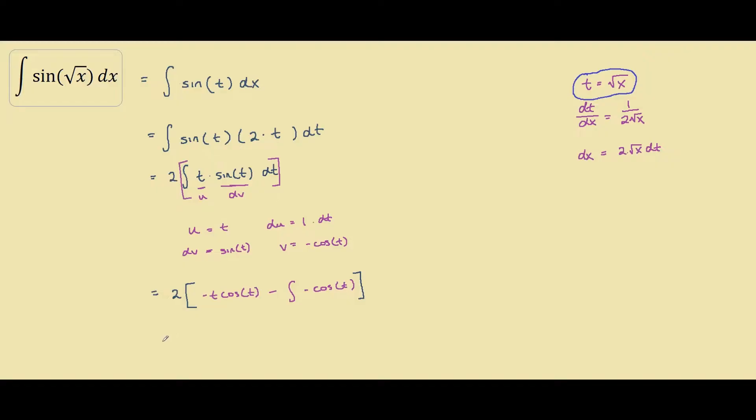Our next step is to expand the brackets, so we're left with negative 2t cosine t. Over here, we have double negatives, so they'll cancel out and become a plus.